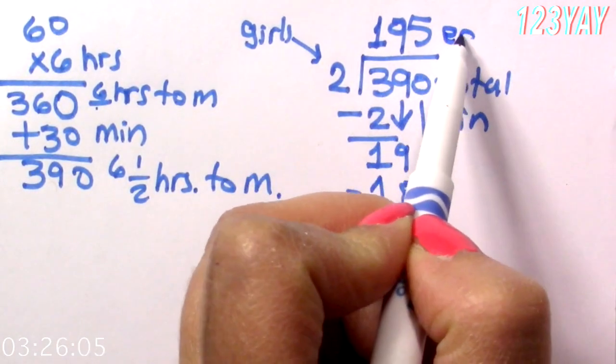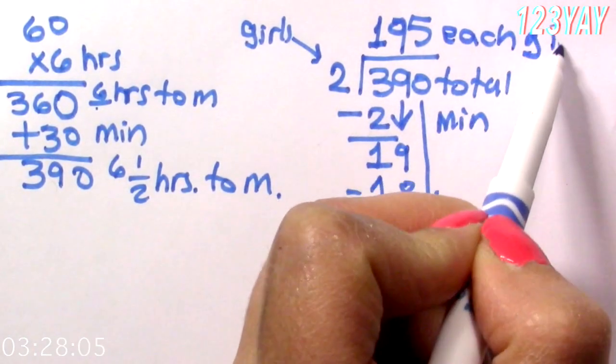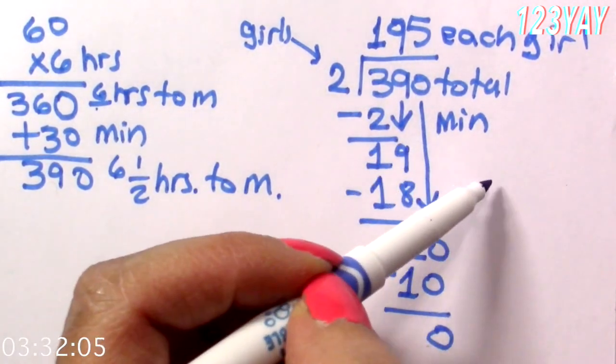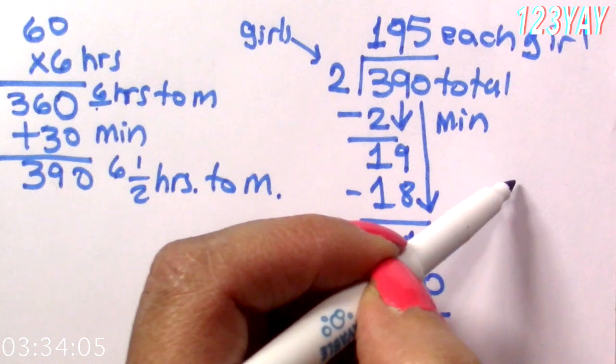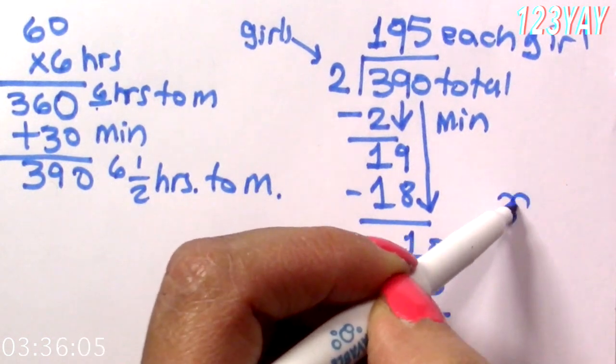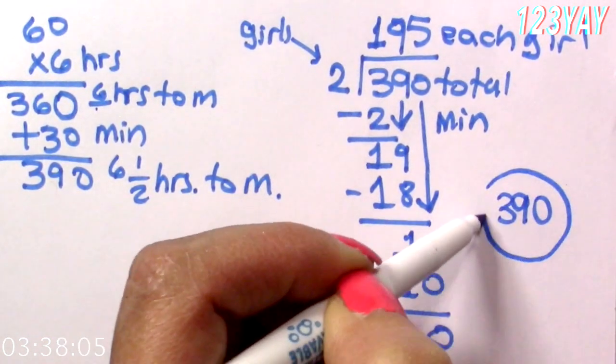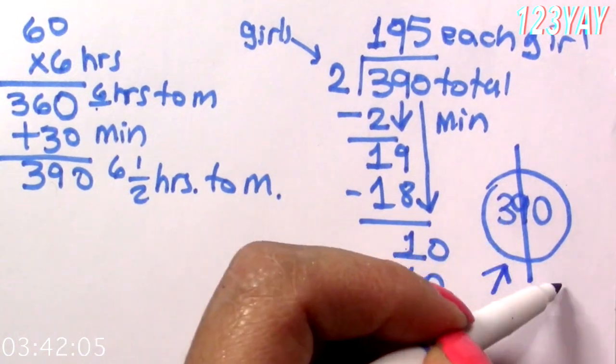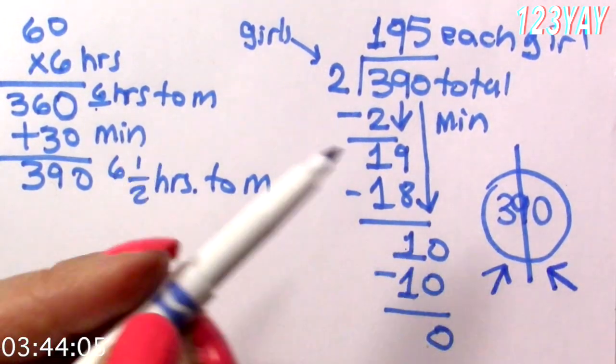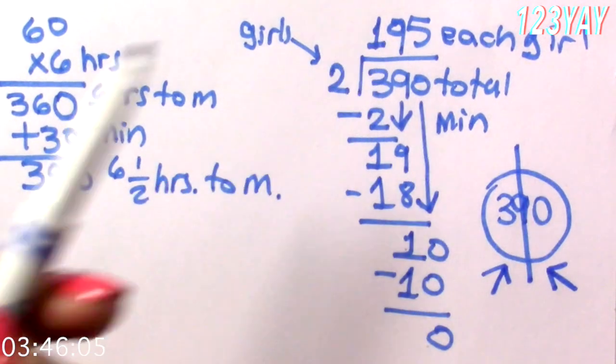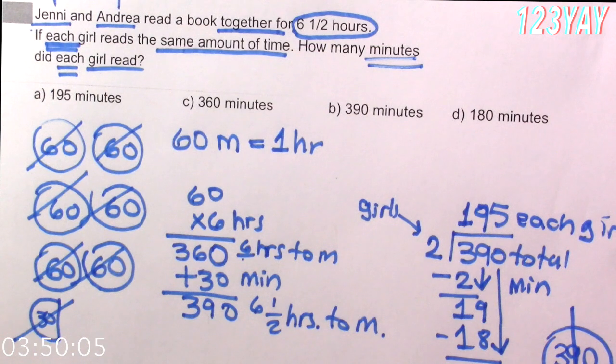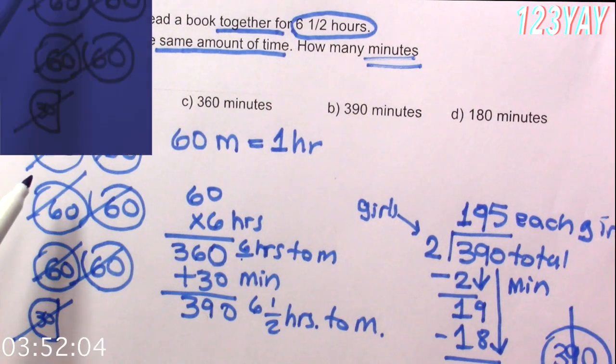That each girl read 195 minutes. And if you want to do a model, this means that 390 was divided in half. One girl read this, one girl read this, and half of 390 is 195. A, 195 minutes. Is this the answer?